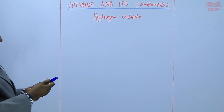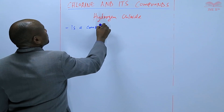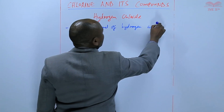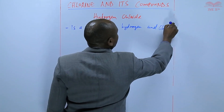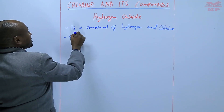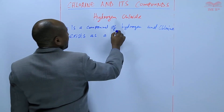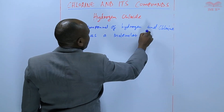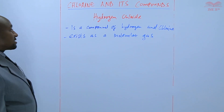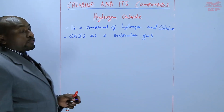Hydrogen chloride is a compound of hydrogen and chlorine. This compound exists as a molecular gas. We are going to investigate how this gas is prepared and what are some of the properties.